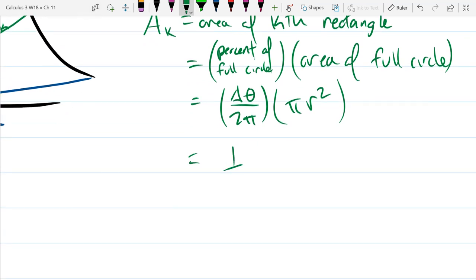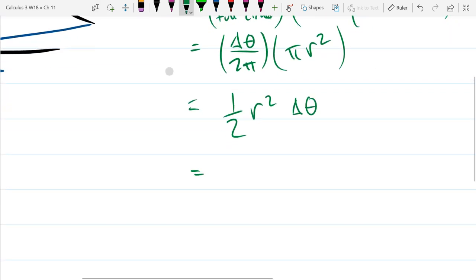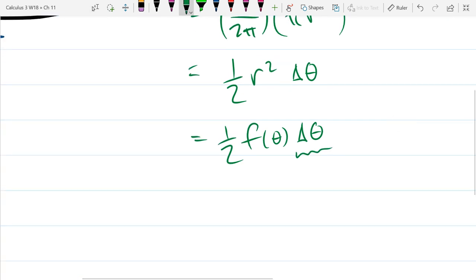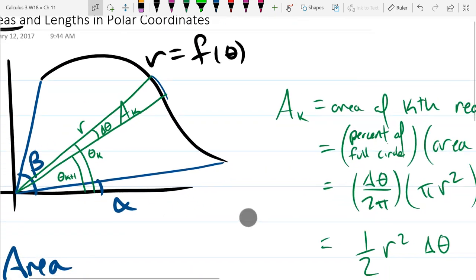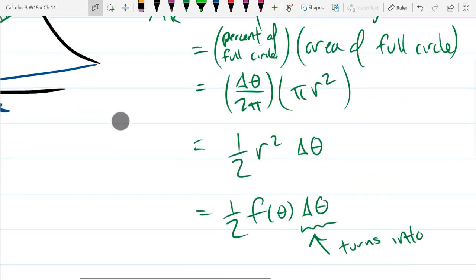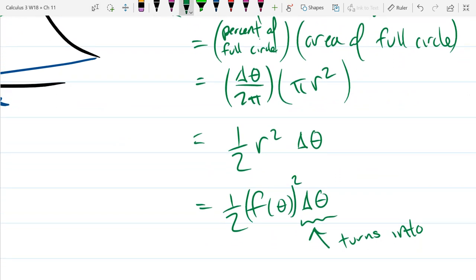So π's are going to cancel. We have (1/2)r²Δθ. And we can write this as (1/2)f(θ)Δθ. When this goes into an integral, this Δθ part turns into dθ. So our Δθ turns into dθ. Why did r² and f of θ work? Because r is f(θ). So I just replaced. So it would be f squared then. Oh, absolutely. Yes.